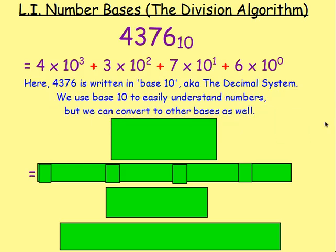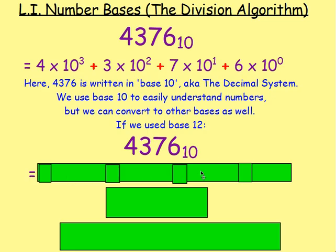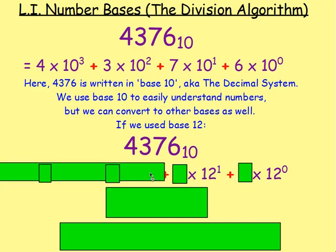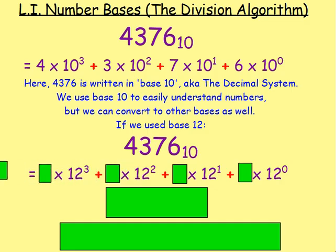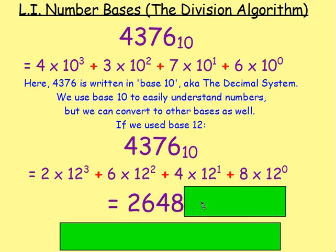Base 10 is also known as the decimal system, which we use every day. However, we can also write any number in terms of another base. Say we had to write 4376 in base 12 — that means expressing it as something times 12 to the power of 0, plus something times 12 to the power of 1, plus 12 squared, plus 12 cubed. The answer is 2 times 12³ + 6 times 12² + 4 times 12¹ + 8 times 12⁰, giving us 2648 base 12.